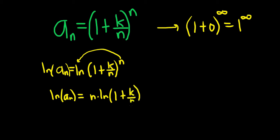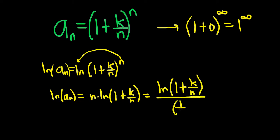Then what you can do is rewrite this as the natural log of (1 plus k over n) over (1 over n). The reason you do this is because now if you think about what's happening: in the numerator you'll get ln of 1, because k over n approaches 0, and in the denominator you'll get 0, because 1 over n approaches 0. So ln of 1 is 0, giving you 0 over 0, so you can use L'Hôpital's rule.